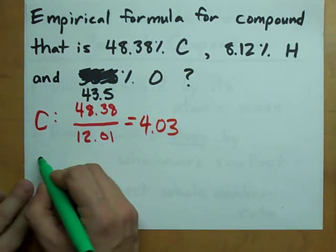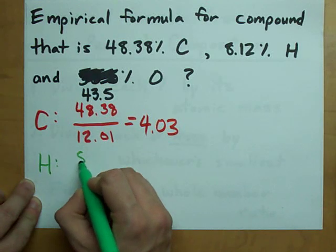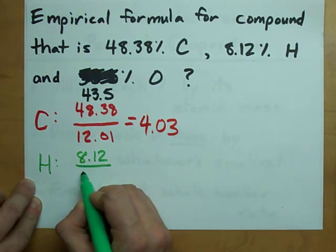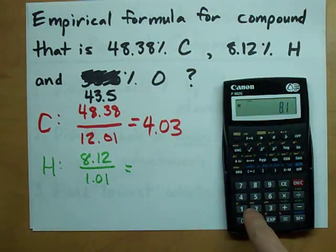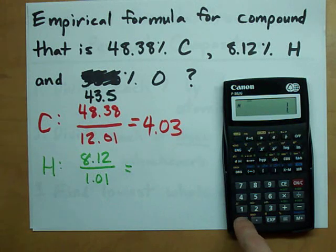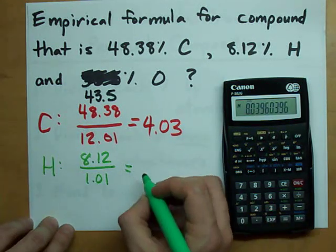We've got to do this for the others. Here's my hydrogen, 8.12% divided by the atomic mass in the periodic table, 8.12 divided by 1.01 gives me 8.04.